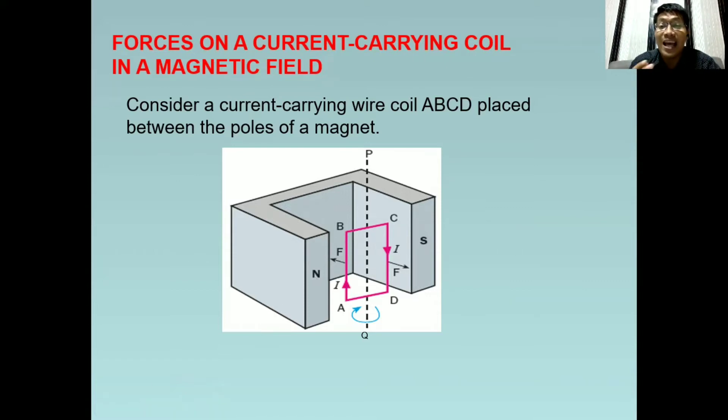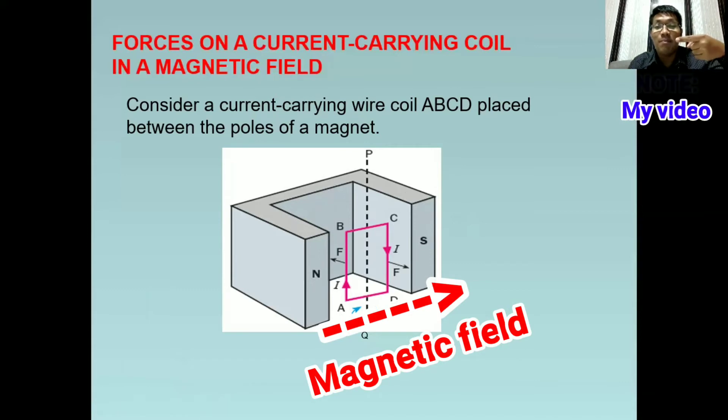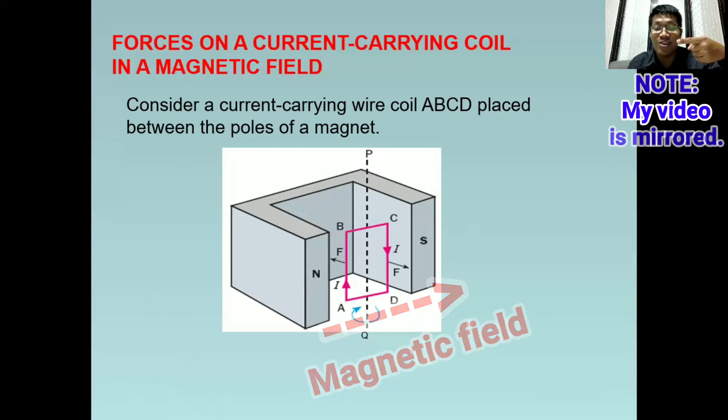Where will the wire coil move? We can apply Fleming's left hand rule in this case. Let's have it step by step. Let's start with the direction of the magnetic field, which is always from north to south. You can follow along as I discuss this.